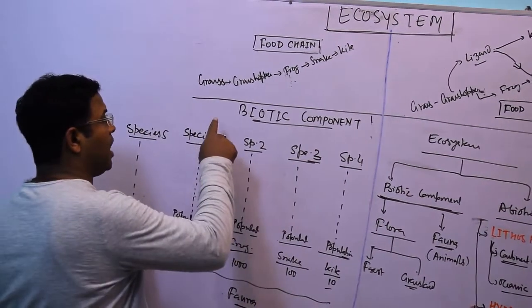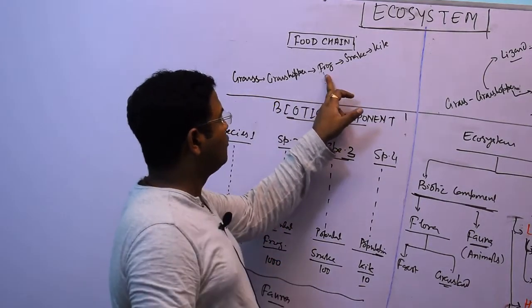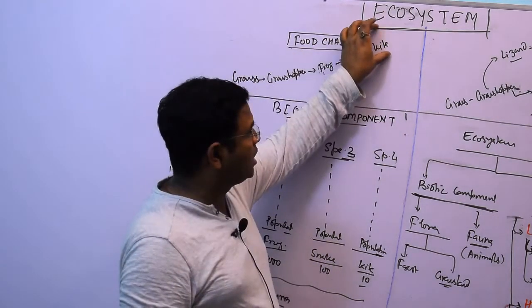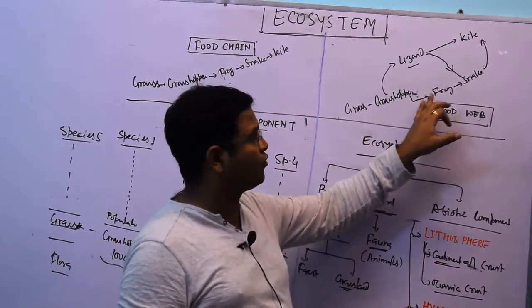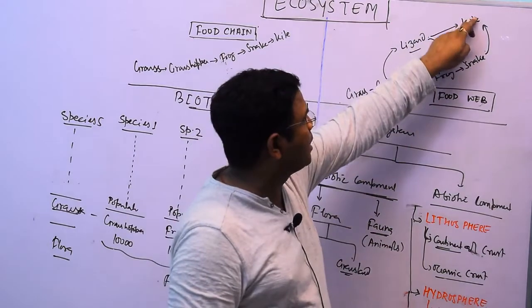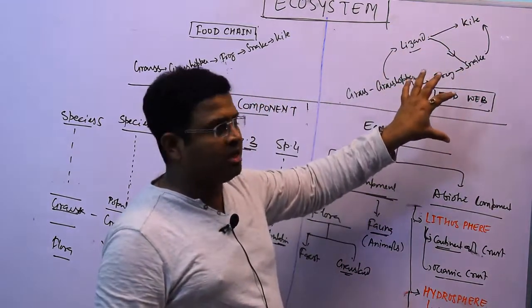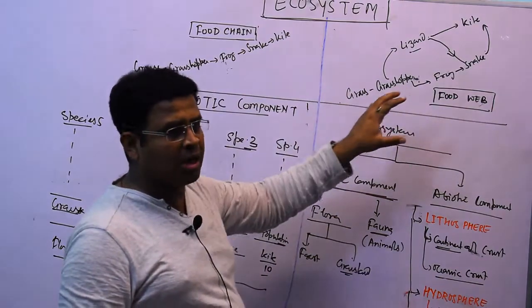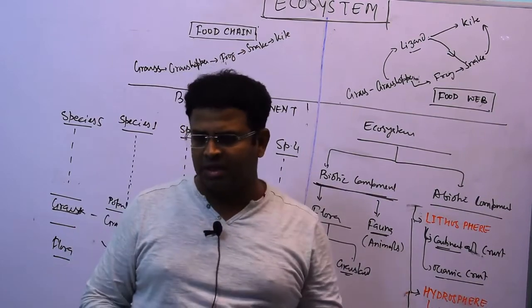Within the biotic community, the grasses are eaten by grasshoppers, grasshoppers are eaten by frogs, frogs are eaten by snakes, and snakes are eaten by kites — this forms a food chain. Also, grasshoppers are eaten by lizards and other organisms through several food chain interlinkages, forming a food web. So there is an interaction within the biotic community in the form of food chain and food web.